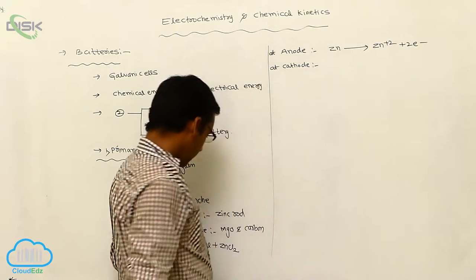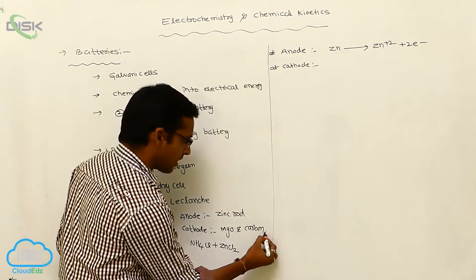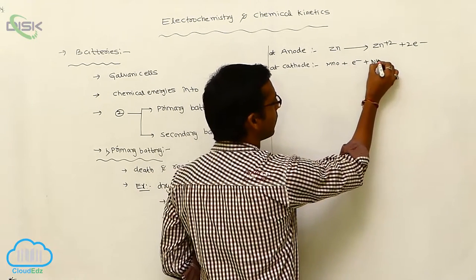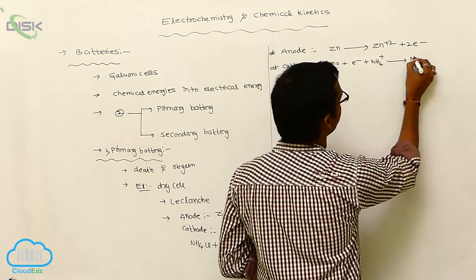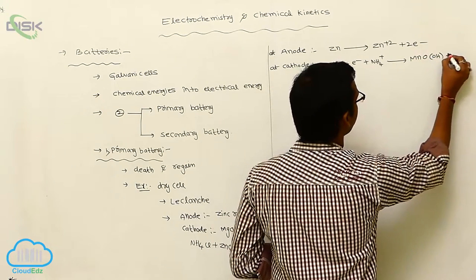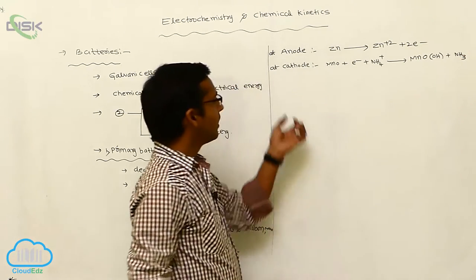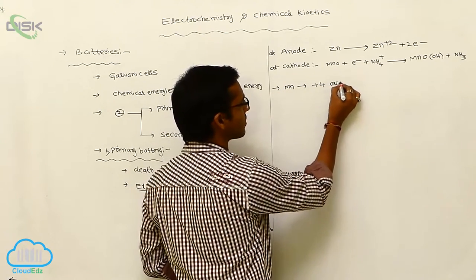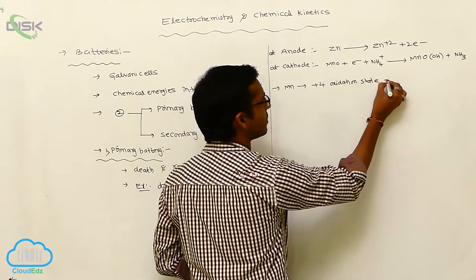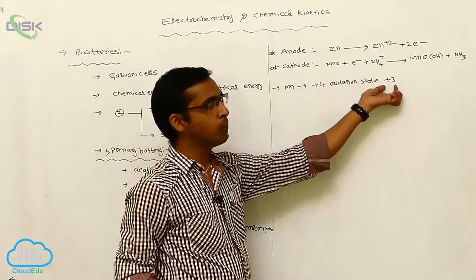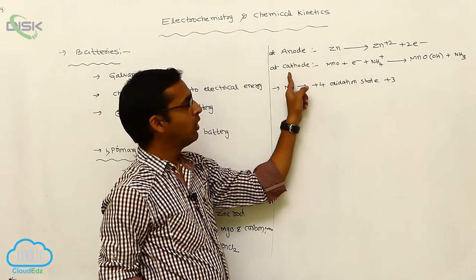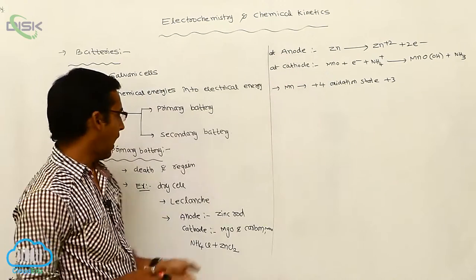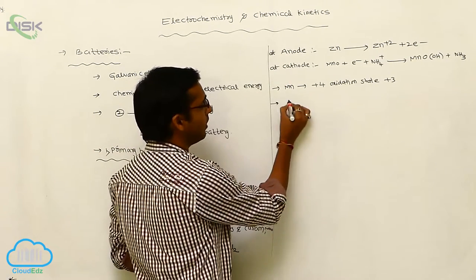At the cathode, manganese oxide reacts with electrons and NH₄⁺ from ammonium chloride, producing NH₃. During this process, manganese is reduced from the +4 oxidation state to the +3 oxidation state. This reduction occurs at the cathode. Another example of a primary battery is the mercuric cell.